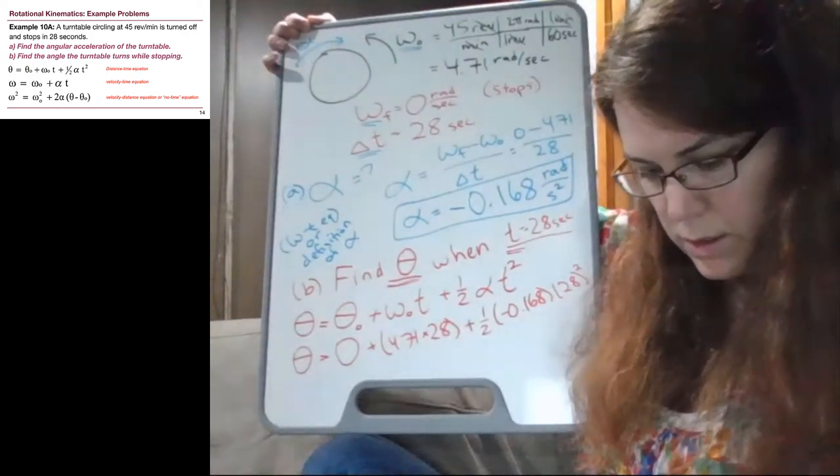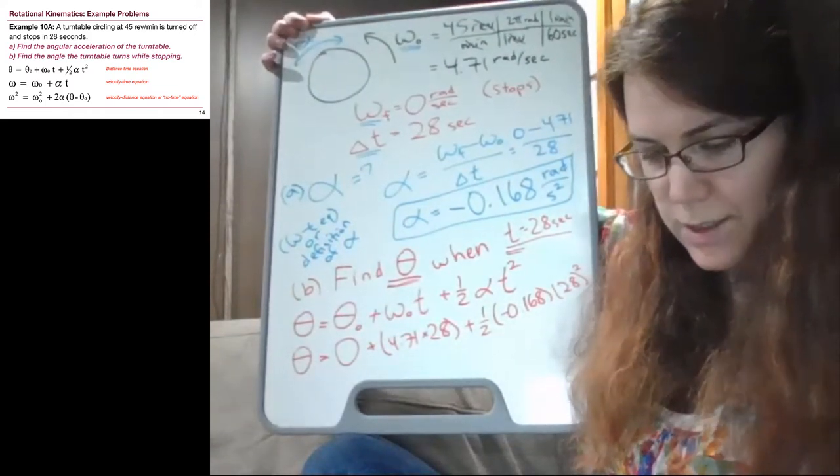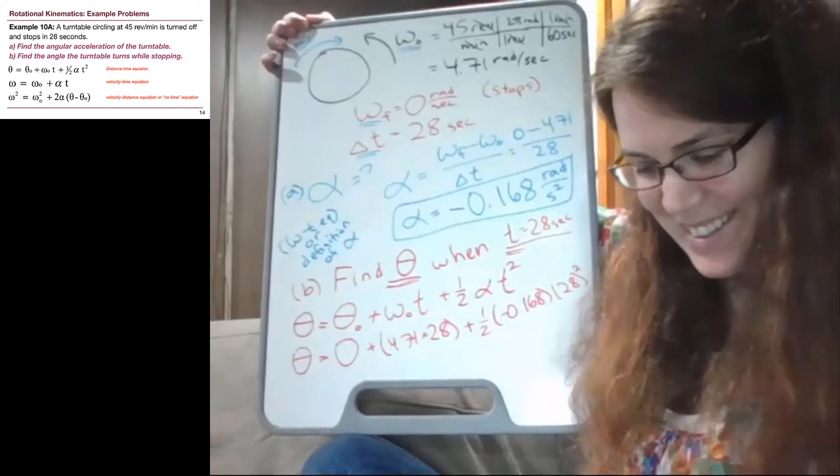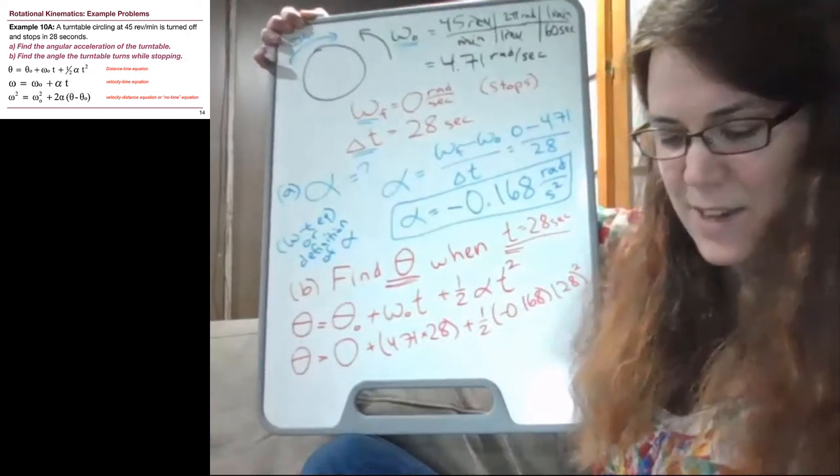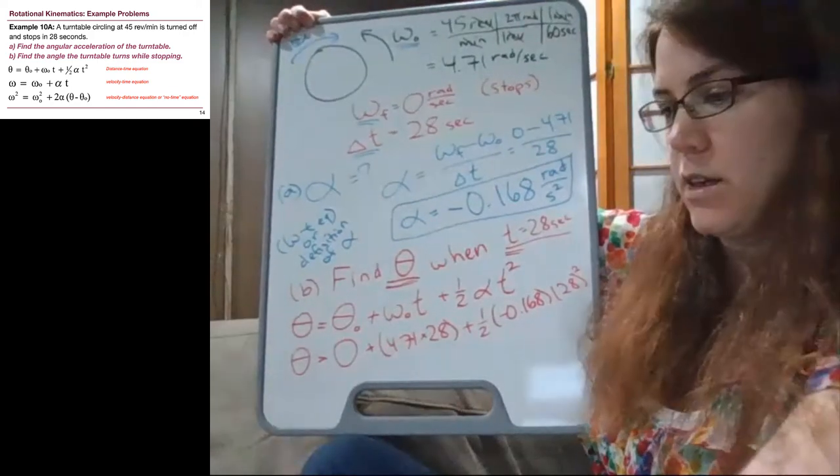All right. And we get a syntax error. Good. All right. We get 65.97 or 66 radians.